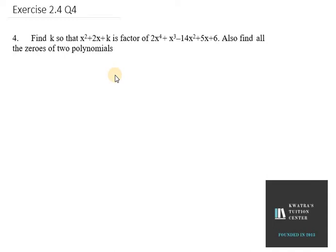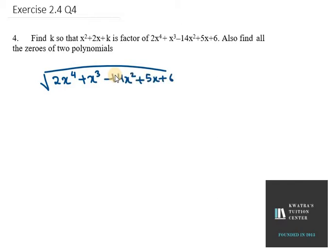We are given the factor, and we need to find the value of k using the division method. We divide 2x⁴ + x³ − 14x² + 5x + 6 by x² + 2x + k. The first term is x² and here we have 2x⁴, so we multiply by 2x² to get 2x⁴. The second term will be 4x³ and the third term will be 2kx².